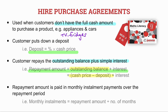In order to calculate our outstanding balance, we take our cash price and minus the deposit from it. Our repayment amount is then paid in monthly installments over a repayment period. The general formula: monthly installments equals the repayment amount divided by the number of months.